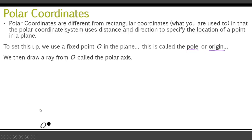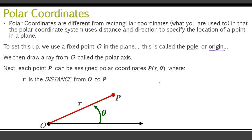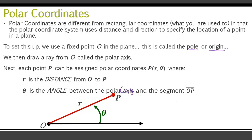Next, we draw a ray from O, and that's called the polar axis. So this line right here is the polar axis, from the origin or pole. That ray is called the polar axis. Point P is going to be assigned polar coordinates — you'll always see it look like this: (r, θ). Theta is going to be your angle measure. R is the distance from O to P. So before, this would have just been X, Y. Now the first number is the distance from O, and theta is the angle between the polar axis and the segment.